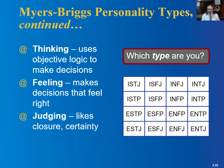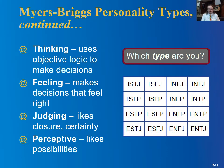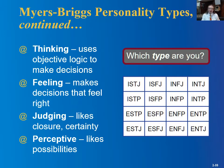Finally, you're either a judging type — who likes closure and certainty — or a perceiving type who likes possibilities and flexibility. In a teaching context, some students want very detailed instructions for writing assignments, while others prefer I leave things open so they can write whatever they want. Most students seem to prefer closure, but I certainly get creative types who want more flexibility in what they turn in.